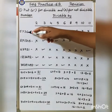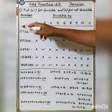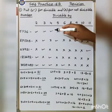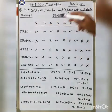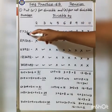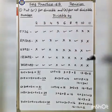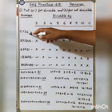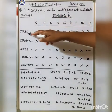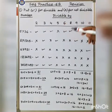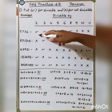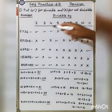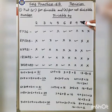For 4: if the last 2 digits — the ones and tens place — are divisible by 4, then the whole number is divisible by 4. Since 36 is divisible by 4, the whole number is divisible by 4. For 5: if the last digit is 0 or 5, the number is divisible by 5. Since the last digit is 6, this is not divisible by 5. For 6: if the number is divisible by 2 and 3, then it is also divisible by 6. Therefore, the number is divisible by 6.